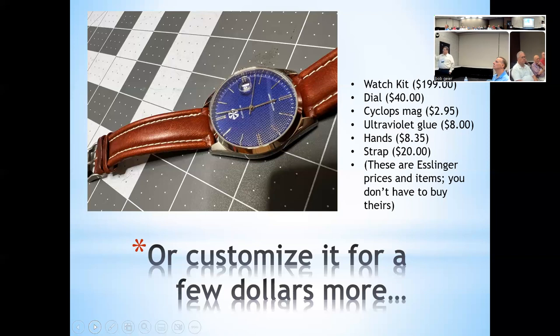The cyclops magnifier, a few bucks. You need to glue the magnifier onto the crystal. If you ever wanted to know how to remove those, it works the same way you put it on. Shine an ultraviolet light on it. The glue will loosen up and pull it off. You buy a little vial of ultraviolet glue. It'll last you probably half a lifetime, if not more. And you just position the crystal, the little cyclops over the date window. The hands were about $8. The strap was another $20. For under $260, you can build your own wristwatch.